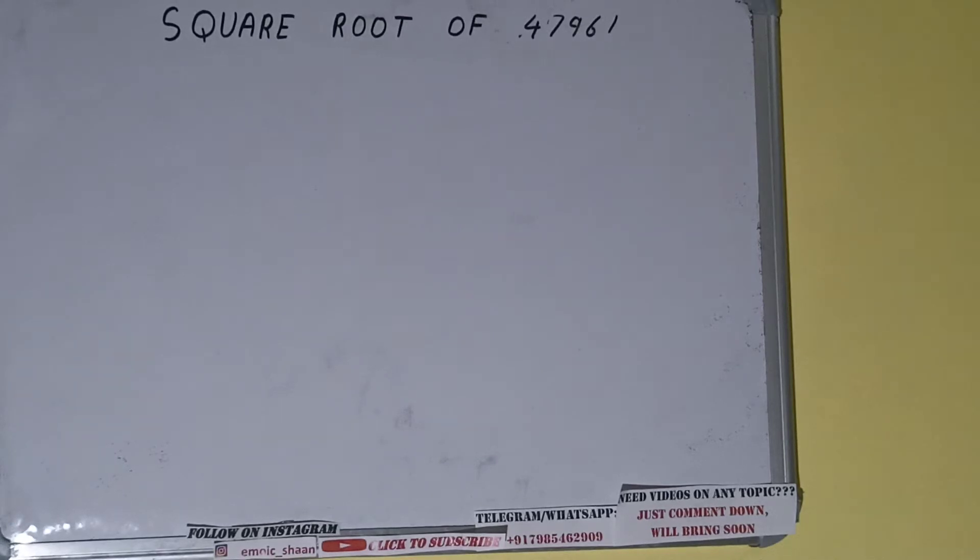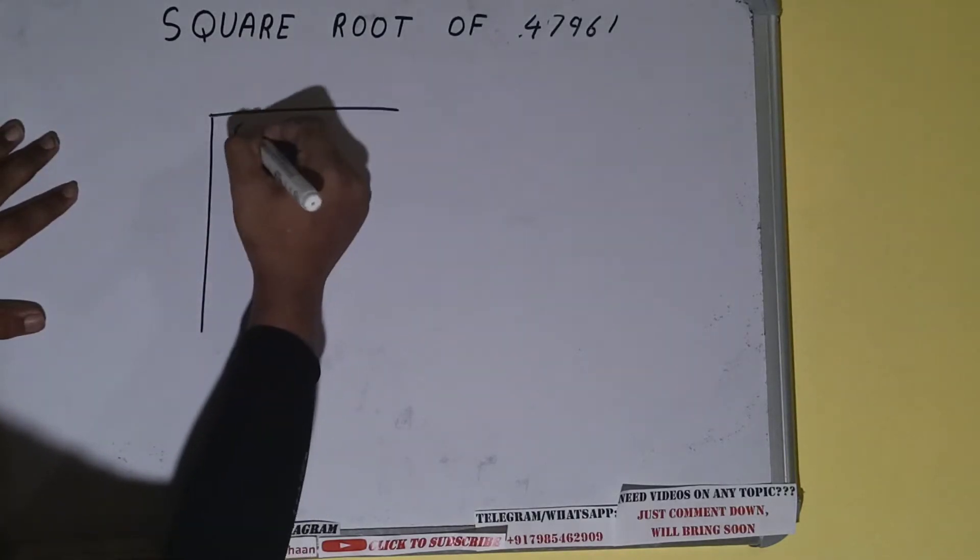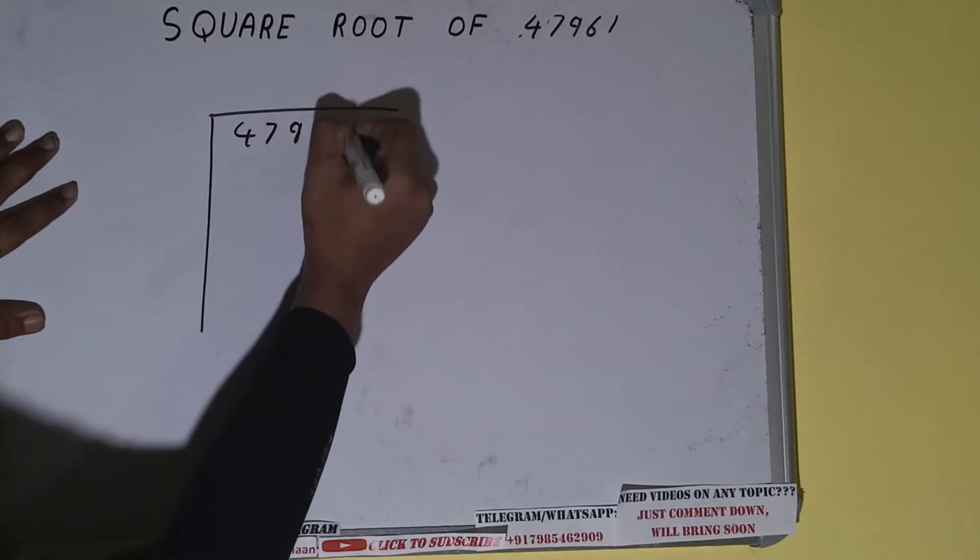Hello friends, in this video I'll be helping you find the square root of the number 47961. So let's start. First of all, we need to write the number like this: 47961.